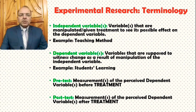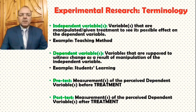Dependent variables are variables that are supposed to witness change, or go through the process of change, as a result of manipulation of the independent variable. For example, in the context of education, student learning could be taken as one of the dependent variables in an experimental research where we are interested in seeing the effect of teaching methods on student learning.